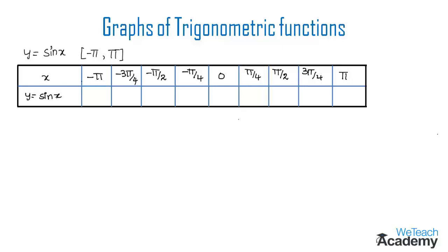We find the values of y by substituting the values of x into the equation. Substituting x equal to 0, we get y equal to sine 0, which is 0. Substituting x equal to pi by 4, we get sine pi by 4, and the value of sine pi by 4 is 1 by root 2, which is approximately equal to 0.707.